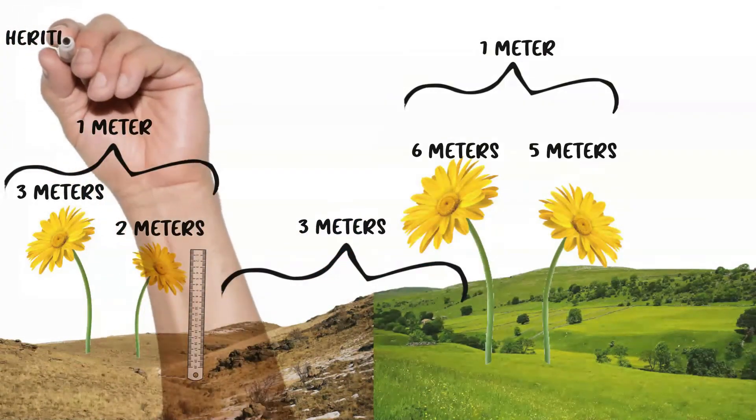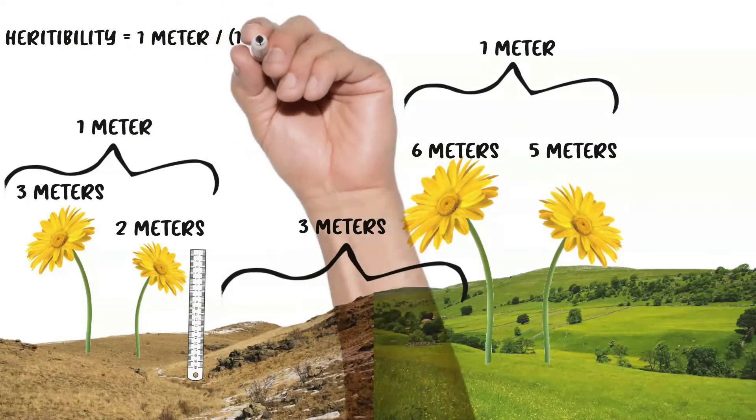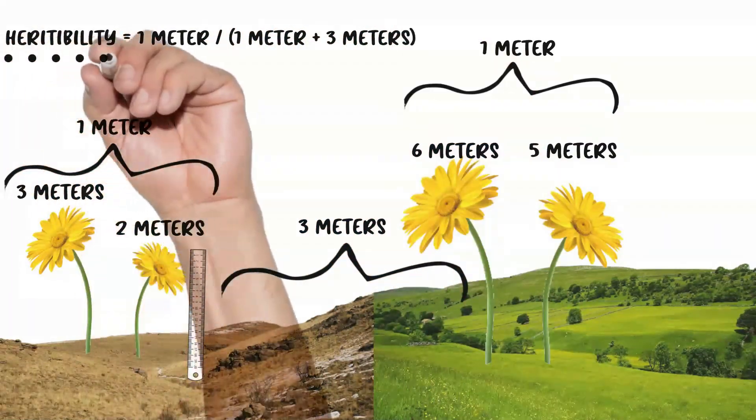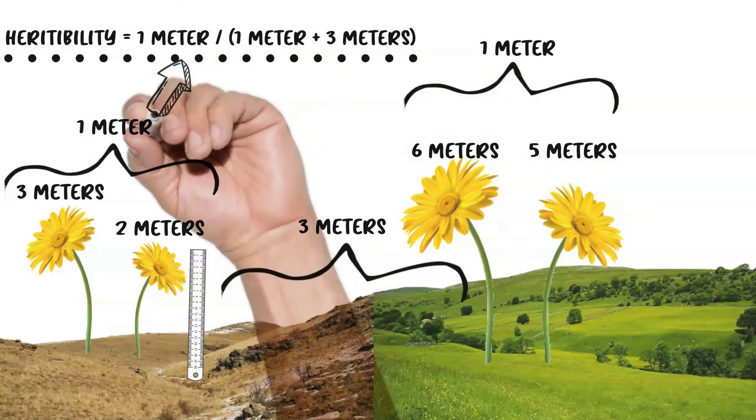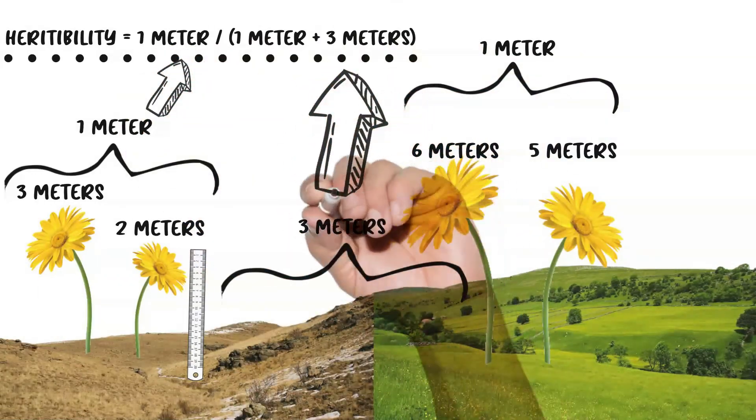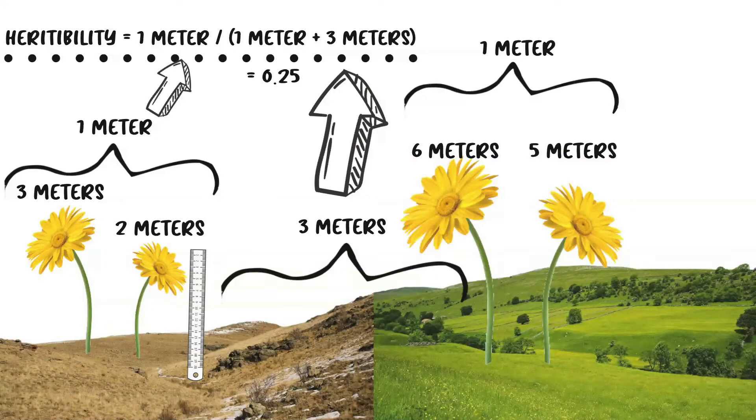So to calculate heritability, in the numerator we put the difference between the flowers in the same environment. And then in the denominator, we put the sum of the genetic contribution to the variation, and we add that to the environmental contribution to the variation. So in this example, the difference between the flowers in the same environment is one, and the difference between the flowers in different environments is three meters.